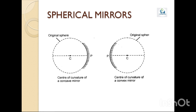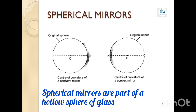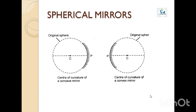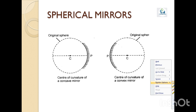So far we have discussed reflection of light from plane surfaces like that of a plane mirror. We will now describe spherical mirrors, which can converge or diverge the parallel rays of light which fall on them. A spherical mirror is a mirror whose reflecting surface is a part of a hollow sphere. There are two types of spherical mirrors: concave mirror and convex mirror.